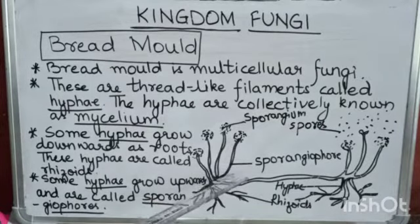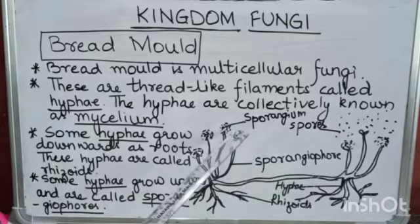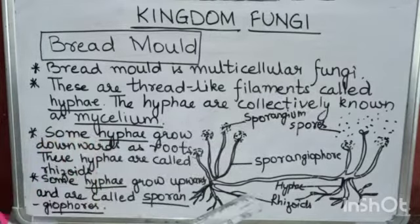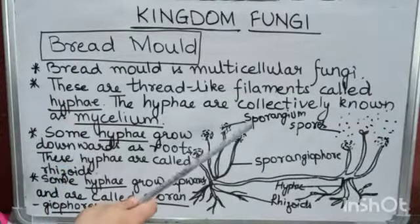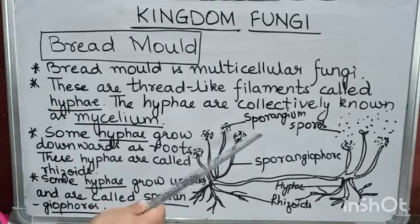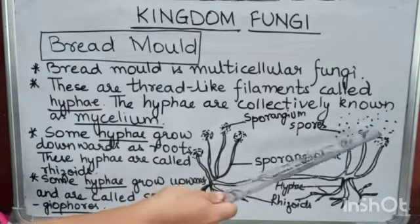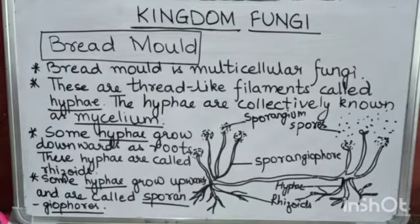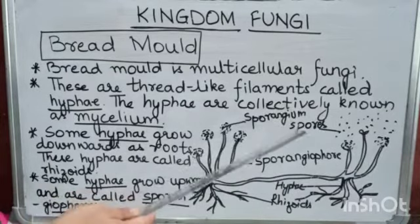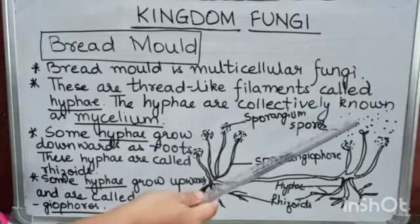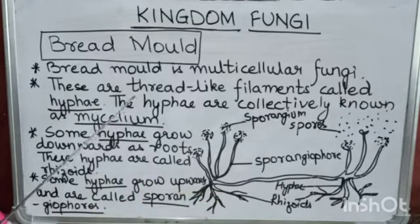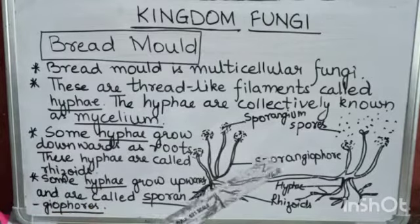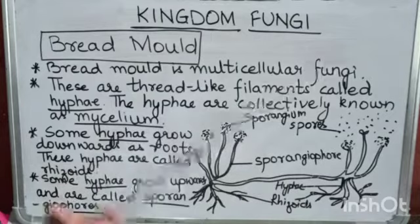The hyphae that grow upwards are called sporangiophores. These sporangiophores bear a sac-like, pouch-like structure that contains many spores, called the sporangium. The sporangiophores bear a sac-like structure called sporangium, and these sporangia contain spores that look like black dots. We can see these black dots on the surface of rotten or stale food material. Some common bread molds are Rhizopus and Mucor.